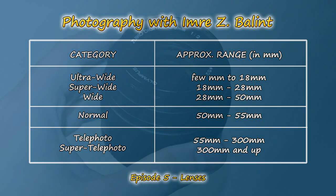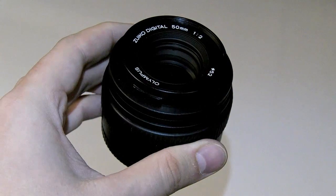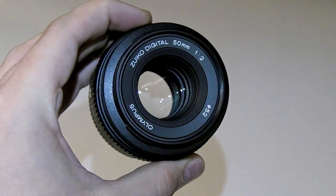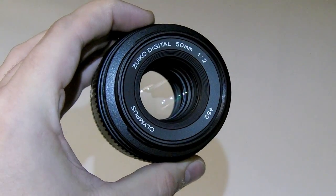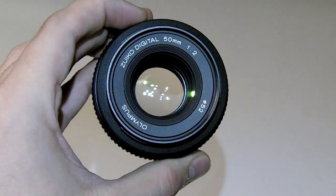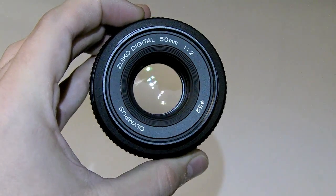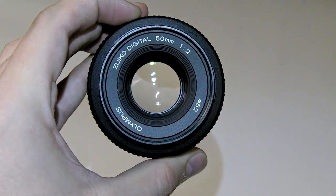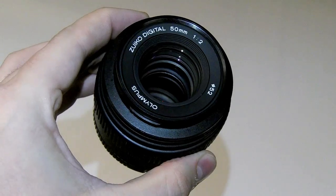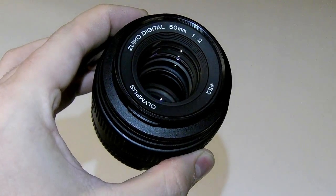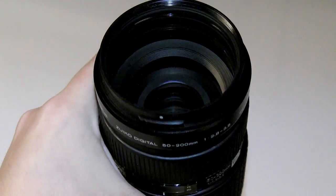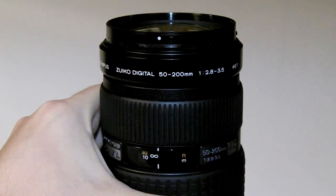Another thing to know about lenses is that they usually come in two major flavors: prime and zoom. Prime lenses are those that have a fixed focal length, like a 50 millimeter lens, and zoom lenses have a focal length range, such as 50 to 200 millimeters.